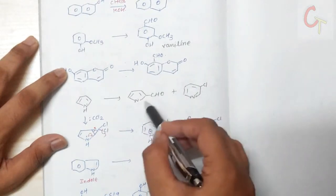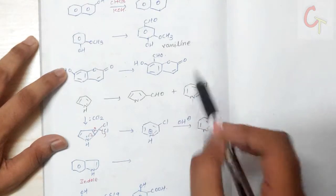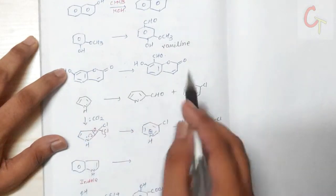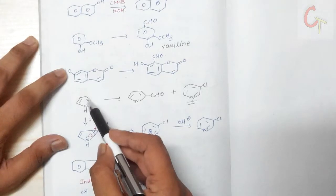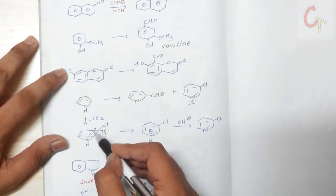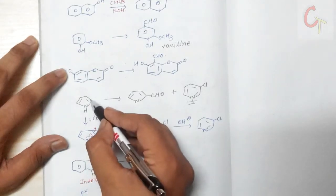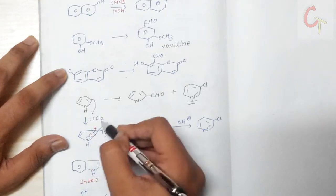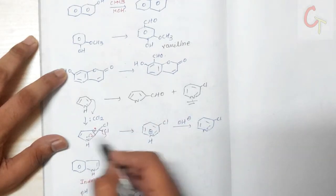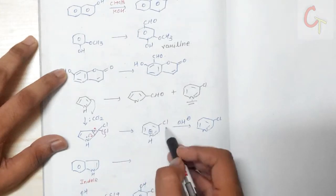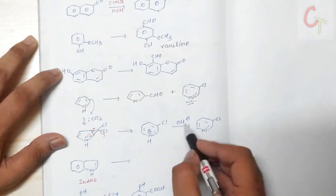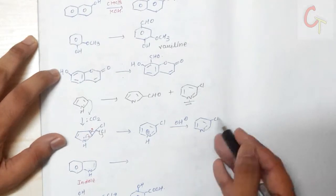In pyrrole, along with formylation, ring expansion takes place giving a halogenated pyridine. The mechanism involves the double bonds forming a cyclopropane-type ring where the carbon attacks to form a CCl₂ triangular (cyclopropane) ring. Then nitrogen's lone pair migrates, opening the ring to give a six-membered ring where nitrogen carries a positive charge and chlorine is eliminated. The base then abstracts a proton to give halogenated pyridine.